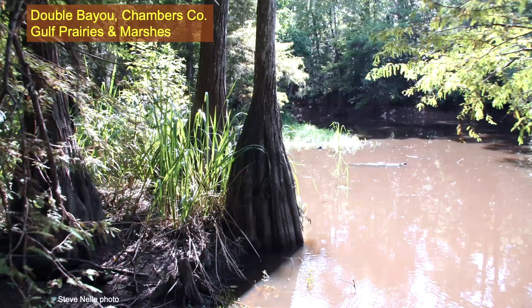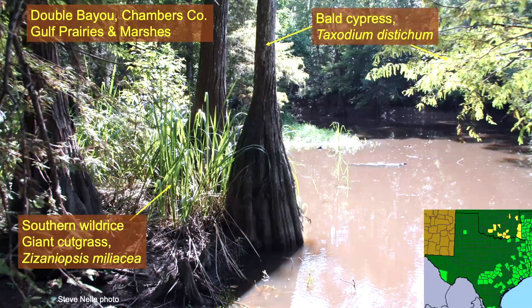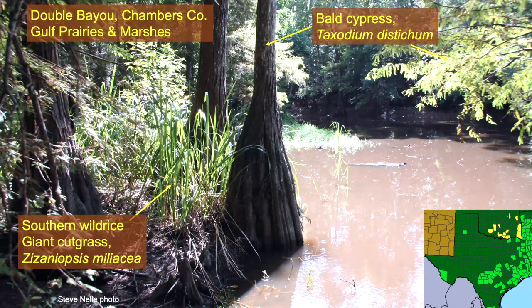Just east of Galveston in Chambers County, we've got a couple of very adaptive riparian plants: bald cypress — here's the trunk and the leaves, and you can even see some of the knees growing there — and then southern wild rice, a grass that can get seven, eight, nine feet tall.